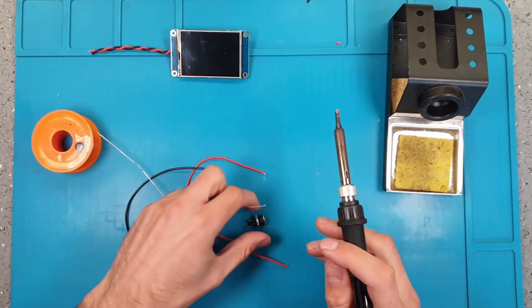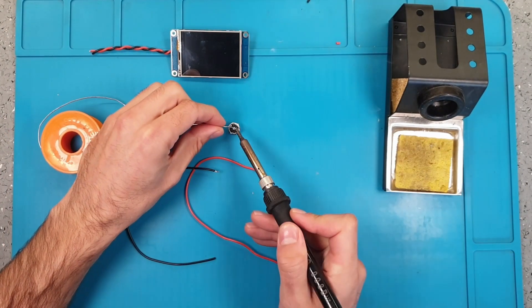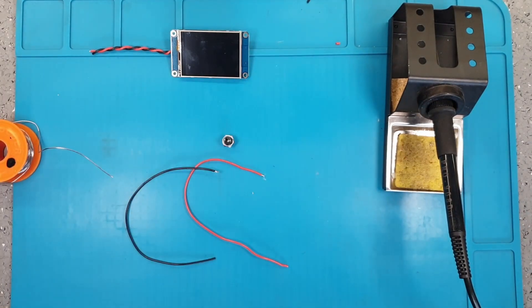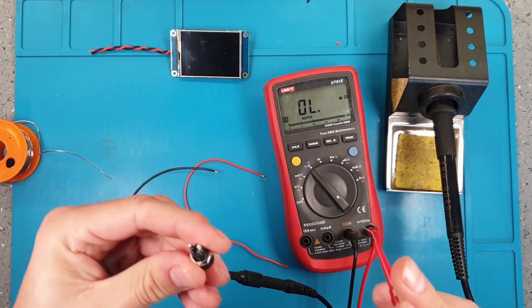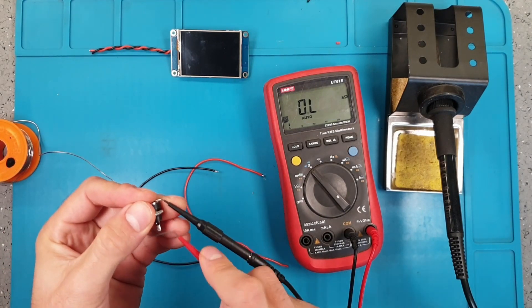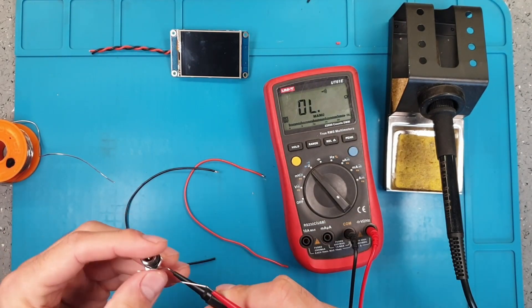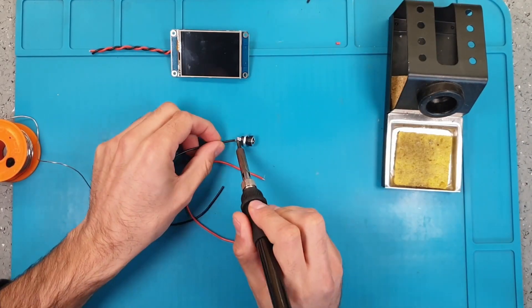We will start with the power plug. As you can see in the video it's very useful to pre-tin the cables and the pins. Then with a multimeter we will make sure the polarity of our plug matches the polarity of our power supply.